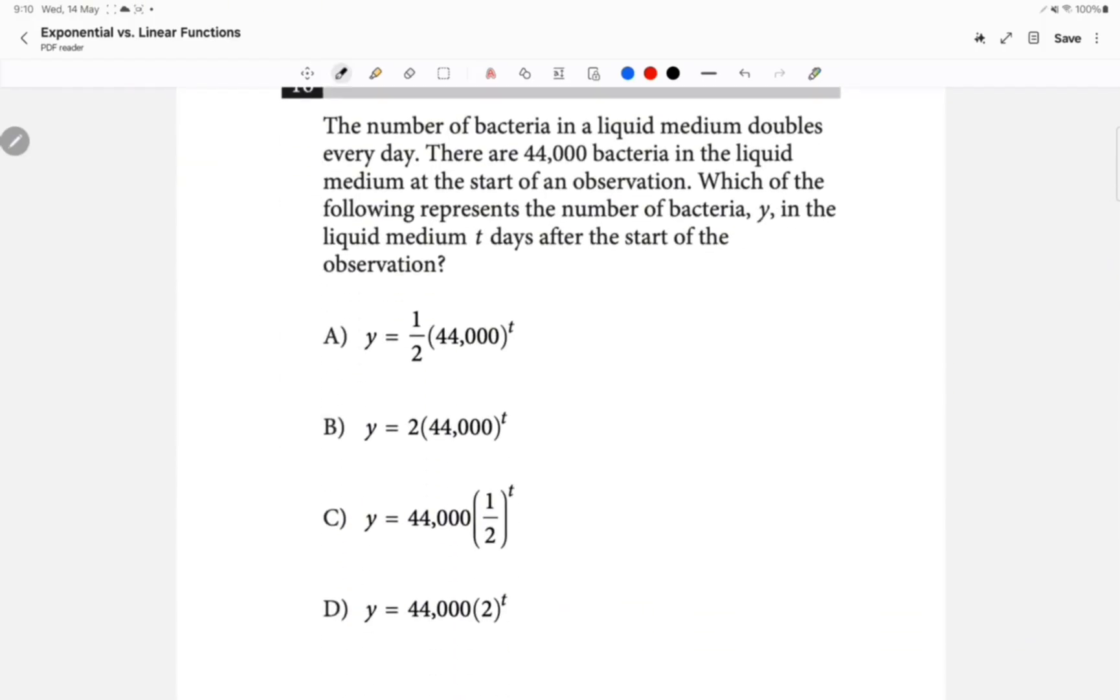The number of bacteria in the liquid medium doubles every day. Now bacteria is growing exponentially. How would I know? Because if you look at all of these expressions, they all represent the expression of exponential growth: Y equals A times B to the power of X. So what's A? The initial amount. What's B? The rate of growth. What's X? The time. How many bacteria were there initially? 44,000. That means you must have 44,000 on the outside. So it's not going to be choice B, it's not going to be choice A. And because the bacteria is doubling, that means B has to be 2. So it's going to be choice D.